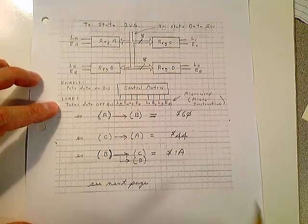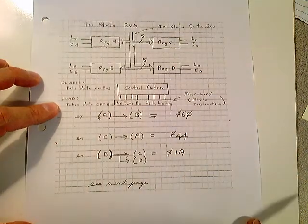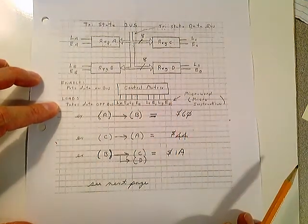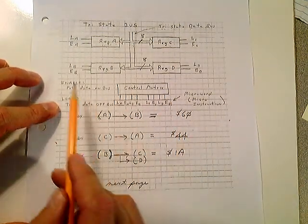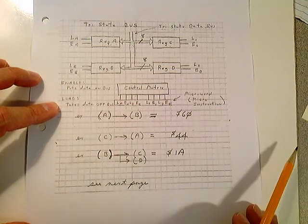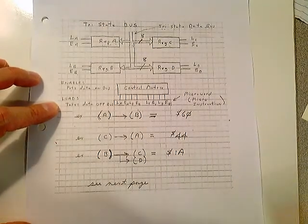And all you do within a microprocessor chip is you just move data around between registers through micro-instructions. By enabling and by loading data into the accumulator, into the output register, into the arithmetic logic unit.